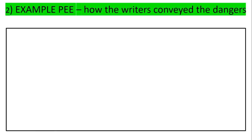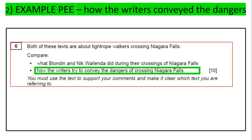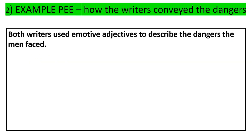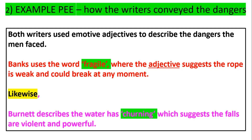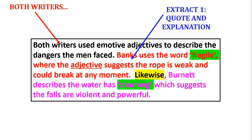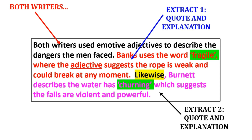Now let's look at the second bullet point PEE — how the writers conveyed the danger. This one looks more at writer's technique. My point is: 'Both writers use emotive adjectives to describe the dangers the men face.' Then: Banks uses the word 'fragile' — the adjective suggests the rope is weak and could break at any moment. Then: 'Likewise, Burnett describes the water as churning' — this suggests the falls are violent and powerful. Both writers showed the dangers through their choice of adjectives. Again: both writers, extract one quote and explanation, extract two quote and explanation, with 'likewise' to show similarity.